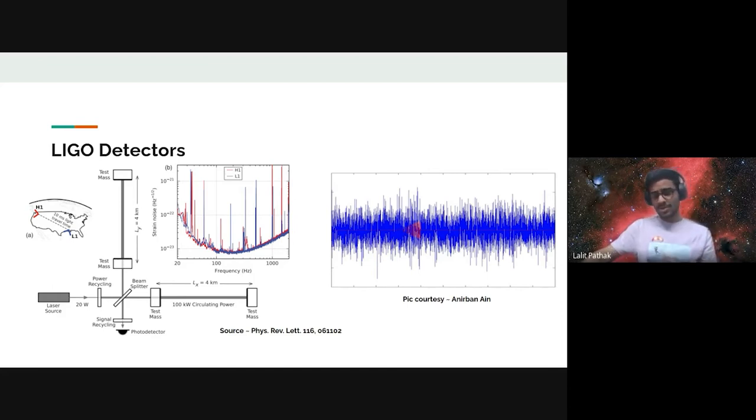LIGO Scientific Collaboration includes more than 1000 scientists working worldwide. Initial LIGO operations between 2002 and 2010 couldn't detect gravitational waves but finally detected them in 2015, when Advanced LIGO began its first formal science operation with enhanced sensitivity.